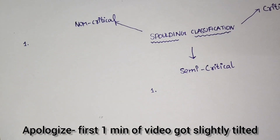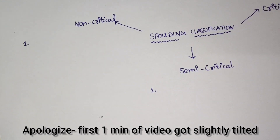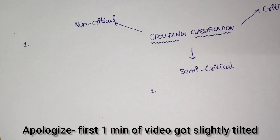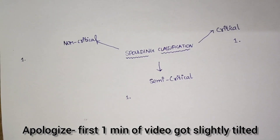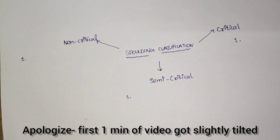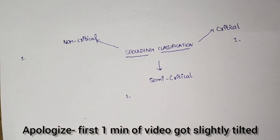Today we are going to see a very high-yielding topic which is often asked in TNSET exam and even NEET PG. TNSET has the habit of asking match-the-following type of questions with this classification. First of all, as an overview, the Spaulding classification is the classification which plays an important role in determining the method of contamination caused by devices.